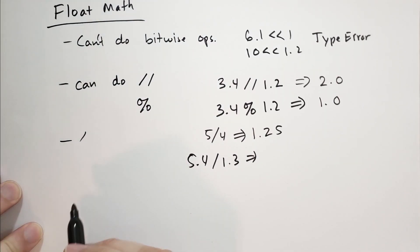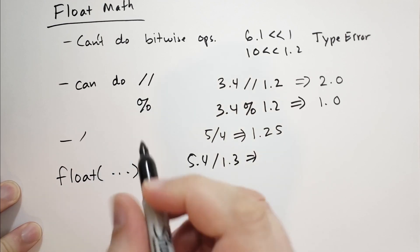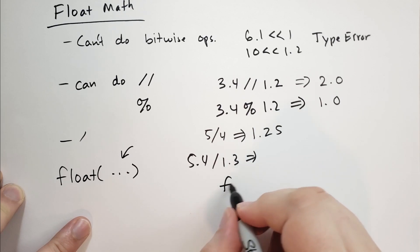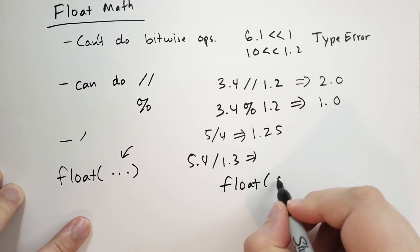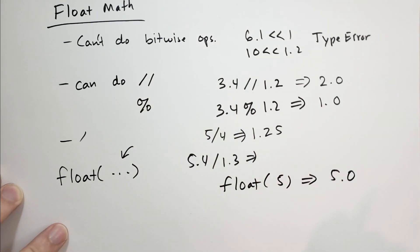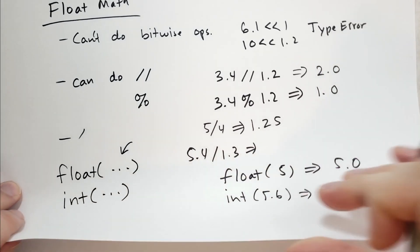There are a couple more functions that are very useful. One is called float. And what this does is if you pass in any number, it's going to convert that to a float. So for instance, if you do float of 5, that is going to give you 5.0. And there's also int, which converts whatever's inside to an integer. And it rounds towards 0, I believe. So int of 5.6 will give you an integer 5.